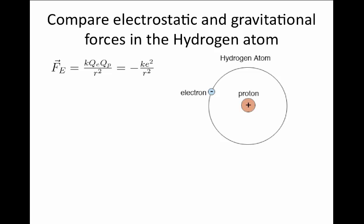The electrostatic force, which I will call F sub E, according to Coulomb, is equal to this constant k times the charge of the electron times the charge of the proton divided by the separation between them squared.